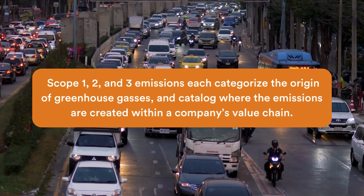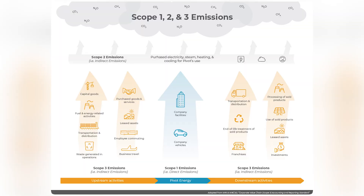Scopes 1, 2, and 3 account for a company's direct emissions from their internal operations, and indirect emissions from their suppliers and customers. If your company has established ESG goals, works with government contracts, or is particularly environmentally minded, you've probably run into these goals before when engaging in a process called carbon accounting.